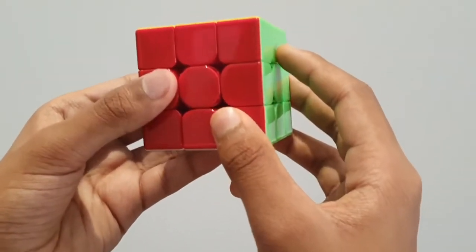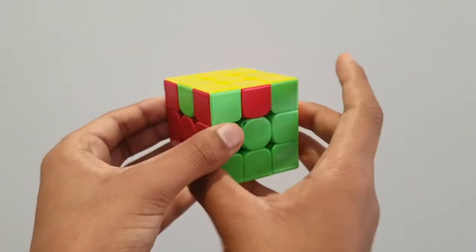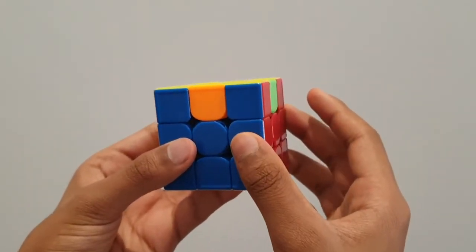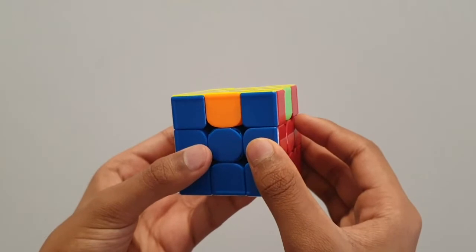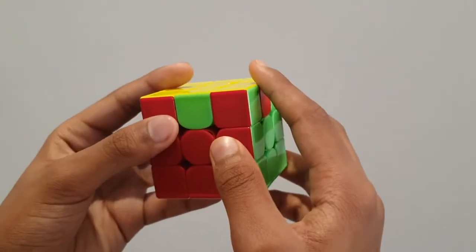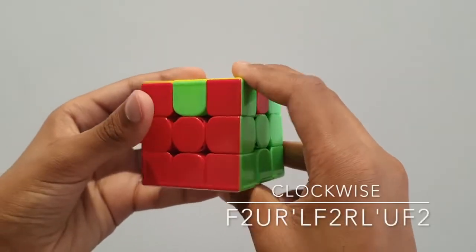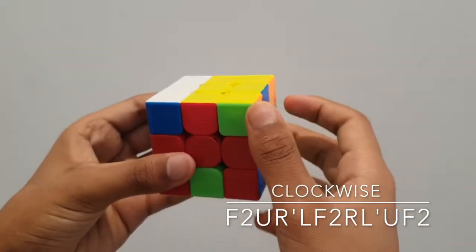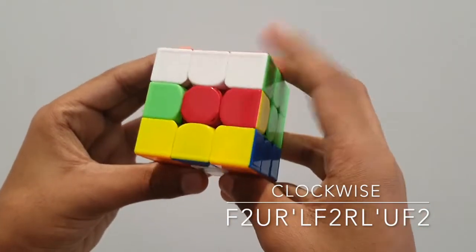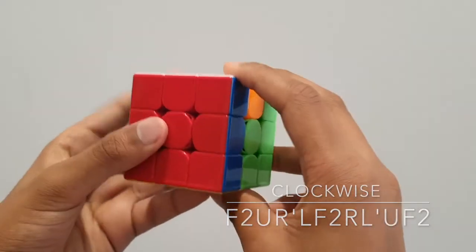Now, what will we do if we don't have any solved edge pieces? If we don't have any solved edge pieces, like in this case over here, what we have to do is create a solved face. Now, this is how we do it. First, we do not have to care about alignment or anything because there's no solved faces. We simply do either our clockwise or anti-clockwise algorithms. So I'm going to do our clockwise algorithm: F2, U, R prime, L, F2, R, L prime, U, F2.